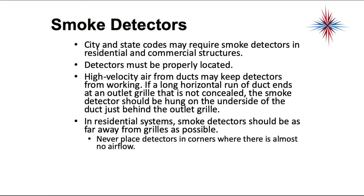City and state fire codes may require smoke detectors in residential and commercial structures. Detectors have to be properly located. High velocity air from ducts may keep detectors from working. If a long horizontal run of duct ends at an outlet grill that is not concealed, the smoke detector should be hung on the underside of the duct just behind the outlet grill. In residential systems, smoke detectors should be as far away from grills as possible. Never place smoke detectors in corners where there is almost no airflow. It's useless.